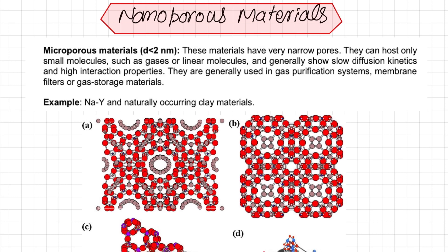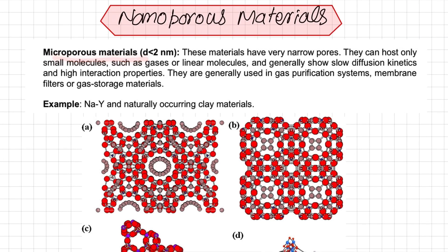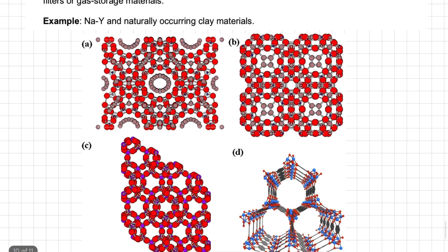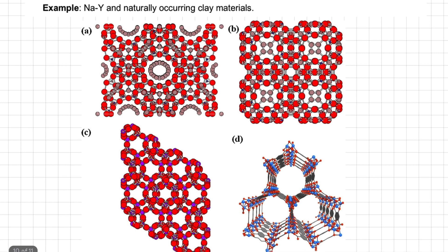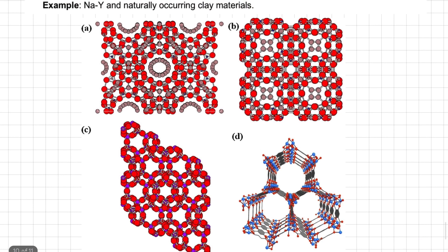According to the IUPAC system, nanoporous materials are classified into three groups by pore dimension. First, microporous materials have pore diameters less than 2 nanometers. These materials have narrow nanopores that can host only small molecules such as gases or linear molecules, generally showing slow diffusion kinetics and high interaction properties. They are used in gas purification systems, membrane filters, or gas storage. Examples include sodium, zeolite, and clay materials with nanopores smaller than 2 nanometers in diameter.